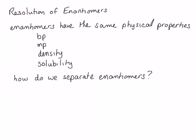So how do we separate enantiomers? We can use something called chiral chromatography, where our stationary phase contains a chiral molecule. And so different enantiomers, which have opposite chiralities, interact with the stationary phase differently.